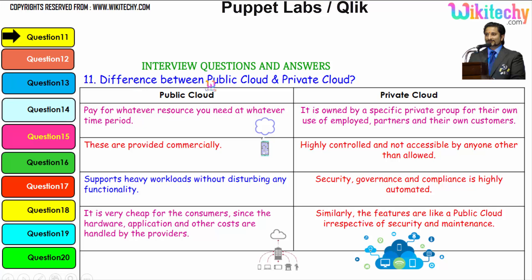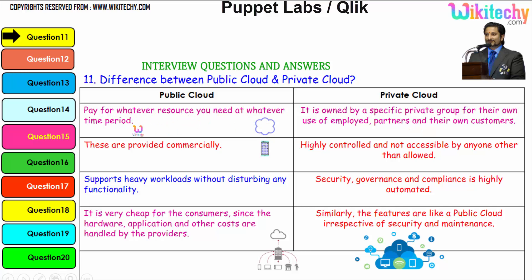So here is the question: the difference between the public cloud and the private cloud. Public cloud is like viewing a film in a cinema theatre, whereas viewing a film at home using a DVD is your private cloud. You pay for whatever resource you need at whatever time period. The private cloud is owned by a specific private group for the use of employees, partners, and their own customers.